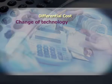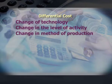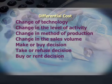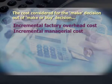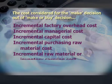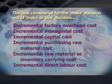Second is differential cost. Differential cost is the increase or decrease in total cost under different alternatives. Alternatives may include a change of technology, change in level of activity, change in method of production, change in sales volume, make-or-buy decision, take-or-refuse decision, buy-or-rent decision, or any other change affecting a particular choice. It is found by subtracting the cost of one alternative from the cost of a second alternative. Examples include: incremental factory overhead cost, incremental managerial cost, incremental capital cost, incremental purchasing raw material cost, incremental raw material or inventory carrying cost, and incremental direct labour cost — these can be costs considered for the make decision in a make-or-buy scenario.